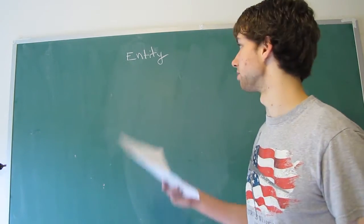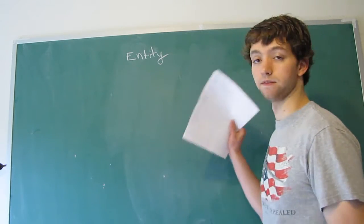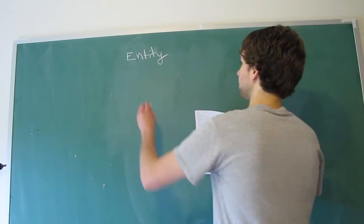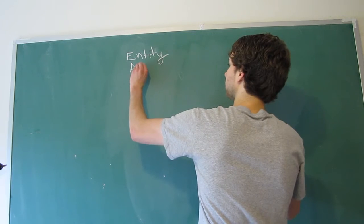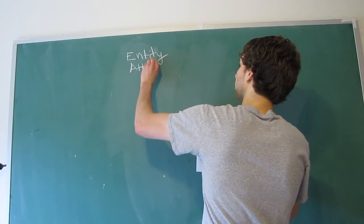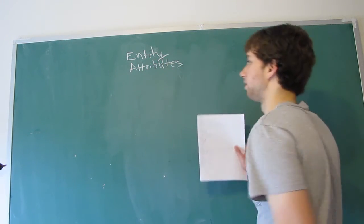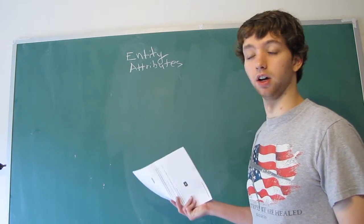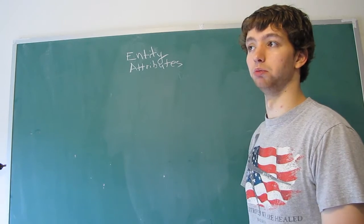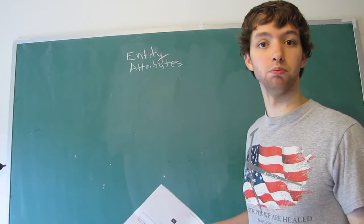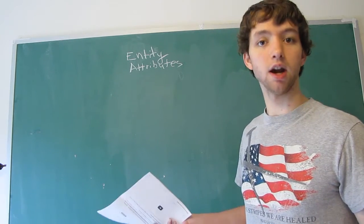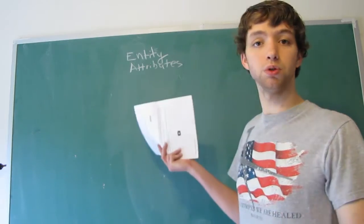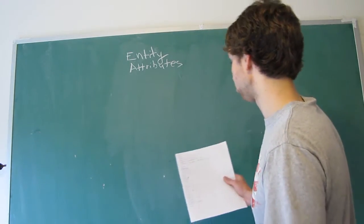Then we have attributes. Attributes are the things we store about the entity. A comment. An attribute of a comment would be the date that it was made. The length. How many characters is it? Who posted it? That's an example of an attribute.